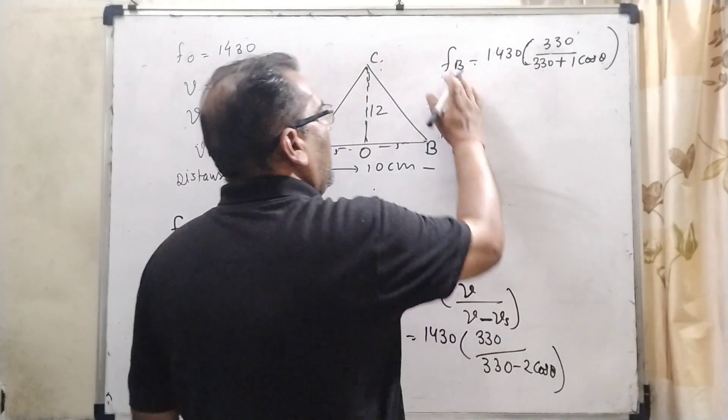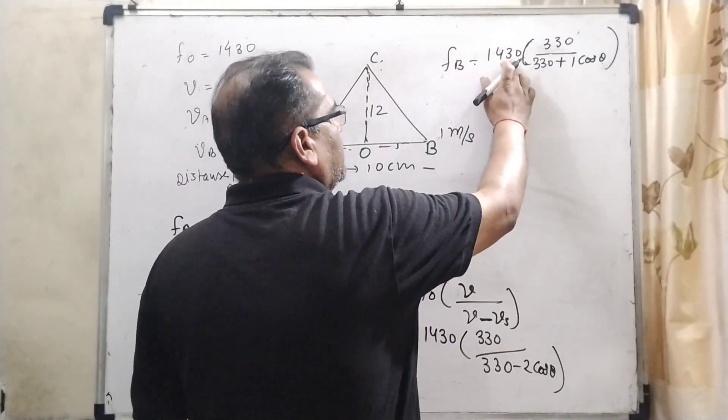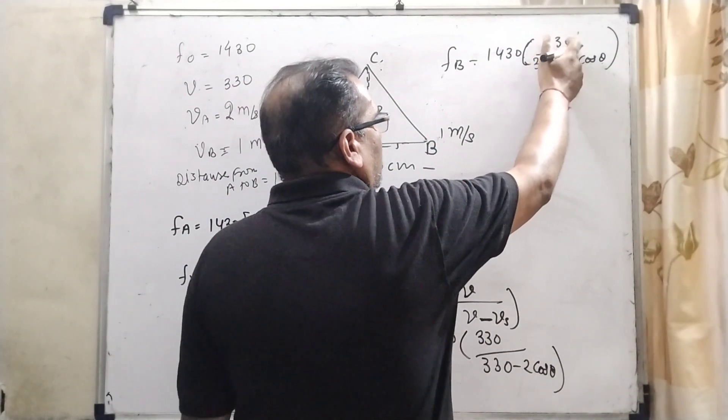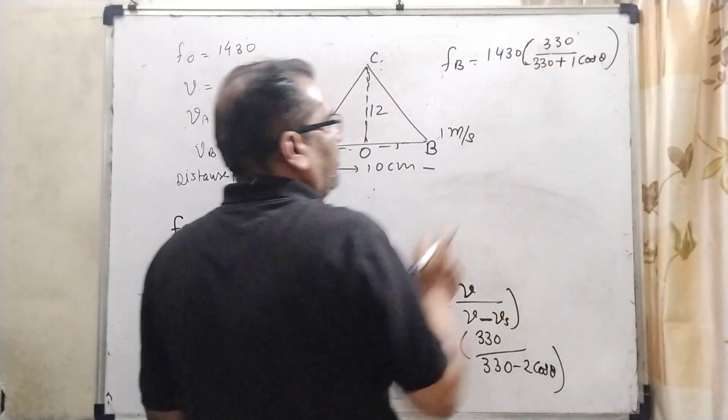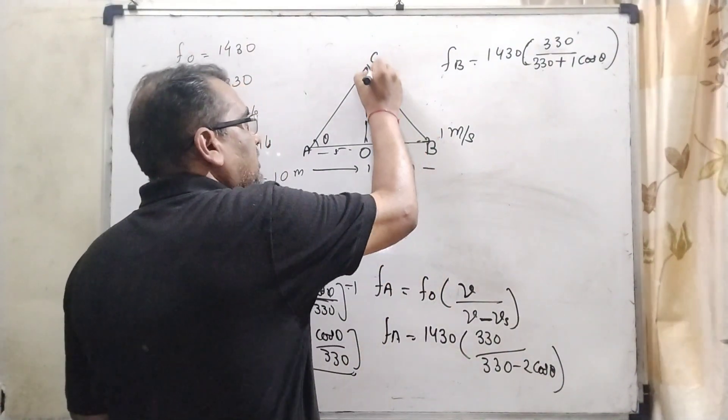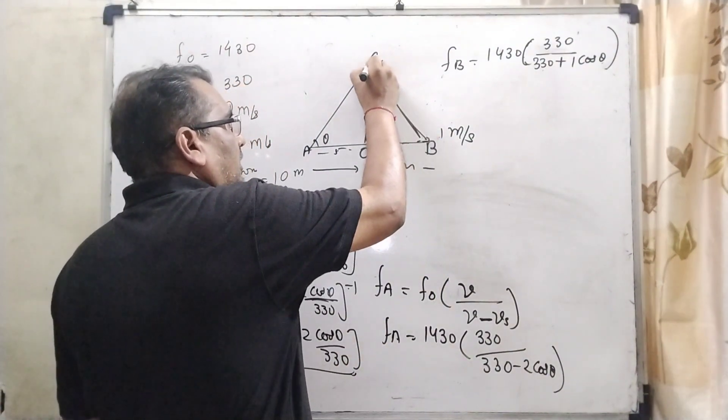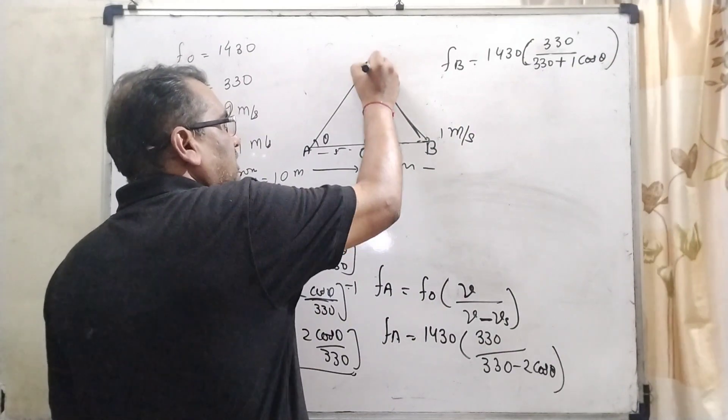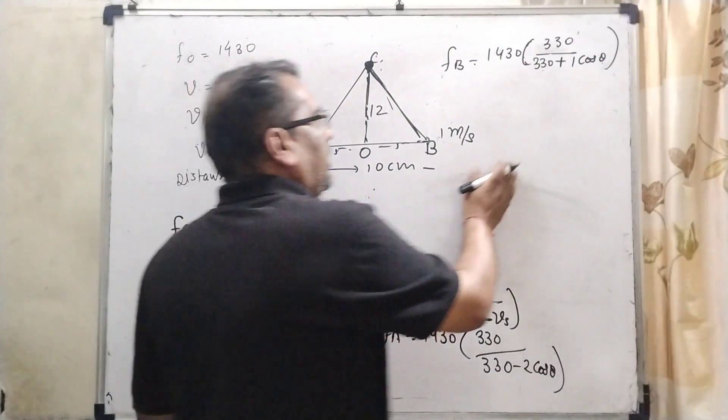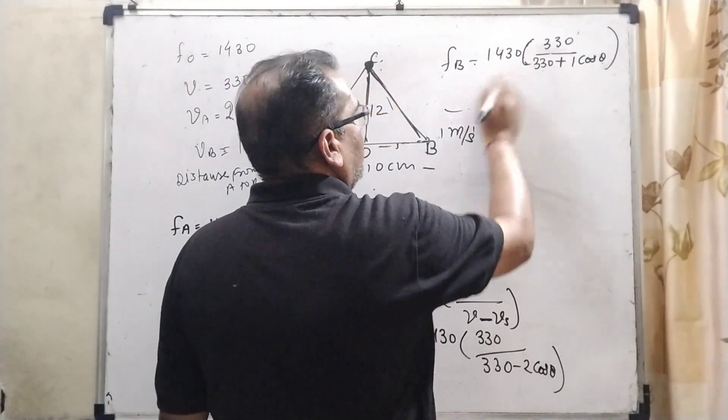When source is moving away from the listener, we are using f_B = 1430 × 330 / (330 + 1 cos θ). Here, 1 cos θ is the component because the sensor of this man is here.